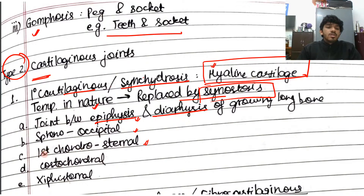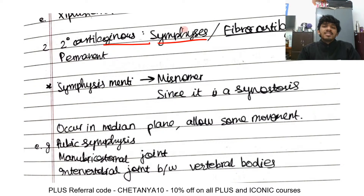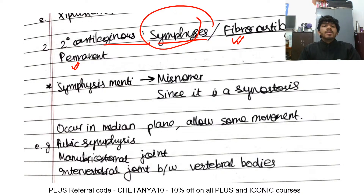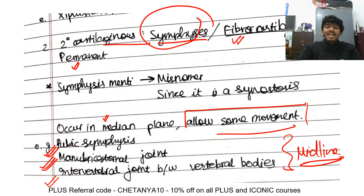Important examples of primary cartilaginous joints include the spheno-occipital, the first chondrosternal, and the costochondral joints — these are very important to know. Secondary cartilaginous joints are called symphyses; they are fibrocartilaginous and permanent. All joints in the median plane of the body are symphyses. Examples include the pubic symphysis, manubriosternal joint, and intervertebral joints between vertebral bodies. Note: symphysis menti is actually a misnomer — it is a synostosis.